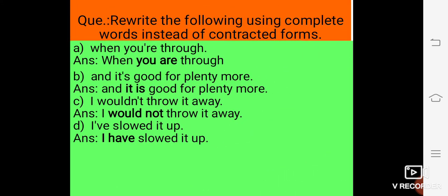The next question, rewrite the following, using complete words instead of contracted form. So let's see, A sentence, when you're through. Here, the contracted form, that is, you apostrophe re, that is the contracted form. You have to write the complete word instead of contracted form. The answer is, when you are through.